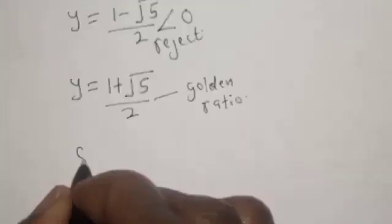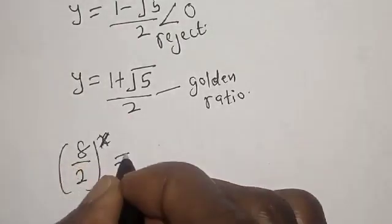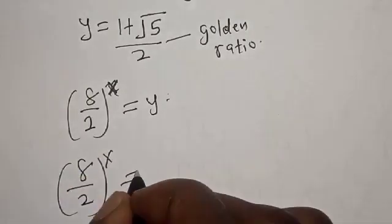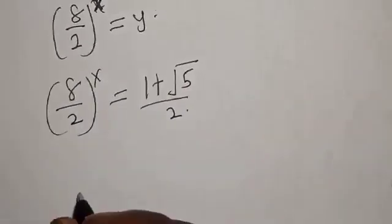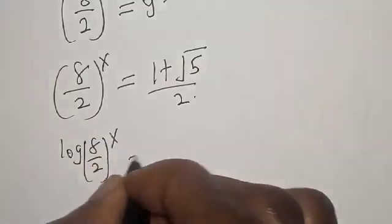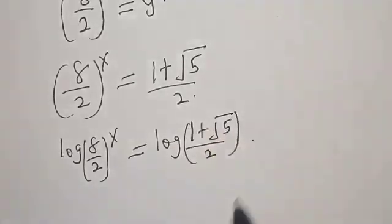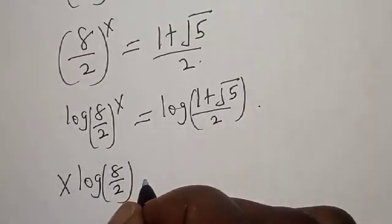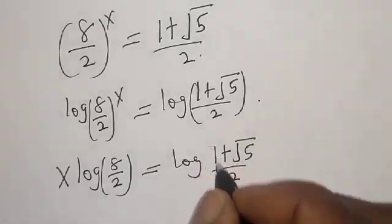Now remember that 8 over 2 raised to power s is equal to y. So 8 over 2 raised to power s is equal to 1 plus square root of 5 over 2. Let's take the log of both sides: log of 8 over 2 raised to power s is equal to log of 1 plus square root of 5 over 2. So s times log of 8 over 2 is equal to log of 1 plus square root of 5 over 2.